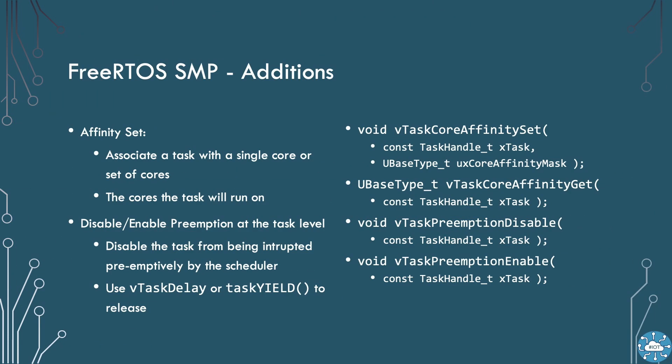FreeRTOS SMP adds four functions to all of the features previously mentioned for the FreeRTOS kernel. Firstly, to manage affinity sets for tasks. These associate a task with a set of cores. By default, tasks are associated with all the cores, so we can use the set of functions to fix a task to core 0 or core 1.